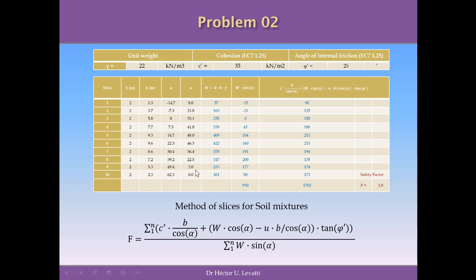We have b, h, alpha, and u — the water pressure — for each slice. The weight for every slice is b times h times the unit weight. Multiplying by sine of alpha gives the denominator terms, and summing the column gives the denominator. Applying the more complex numerator formula for every slice — using cohesion of 35, width b of 2, cosine of alpha, the weights, water pressure u, and the tangent of 25 degrees for the angle of internal friction — we obtain the numerator values. Summing the numerator column and dividing by the denominator gives the safety factor of 1.8 for this slope.